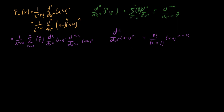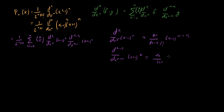For k equal to n, we expect n! to remain, since only the x^n term survives and taking n derivatives gives n!. Setting k equal to n, we're left with n! out front and (x-1) raised to the 0, which is 1 — so it works out. Using the same reasoning, the (n-k)th derivative of (x+1)^n equals n! over k! times (x+1)^k. You should double-check this for k equals 0 and k equals n.